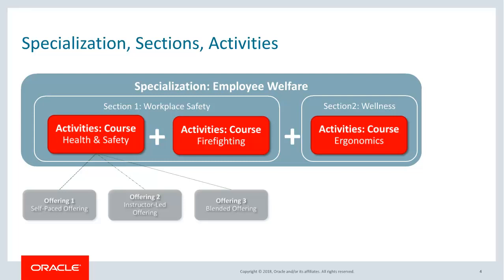Here you see an example of a specialization called Employee Welfare. It has two sections. Section 1 is related to workplace safety and Section 2 is about wellness. Section 1 has two courses which are related, and similarly Section 2 has one course. All this together forms a specialization.